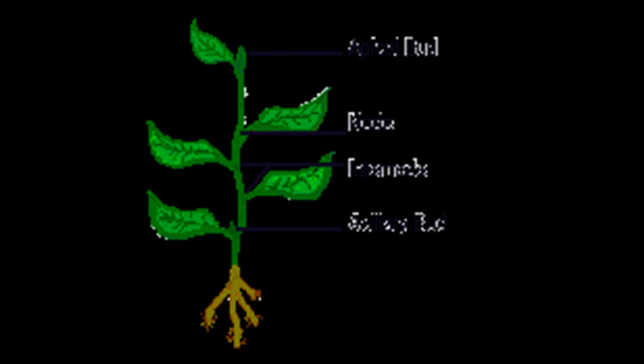Leaves regulate plants' temperature and produce the energy needed for the plant. They are attached to the stem by a leaf stalk called the petiole. The part where the leaves attach to the stem is called a node, and the space between two nodes or between each leaf is called an internode. Terminal bud or apical bud is present at the top of the plant.